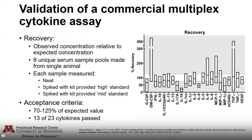Assay validation is comprised of four major components. The first is recovery — defined as measuring the observed concentration of an analyte relative to the expected concentration. We created eight unique serum sample pools from a single animal, each measured neat, spiked with the kit's highest standard, and spiked with the kit's mid-range standard. Our acceptance criteria was recovery between 70 to 125 percent of the expected value, and with that criteria 13 of the 23 cytokines passed.